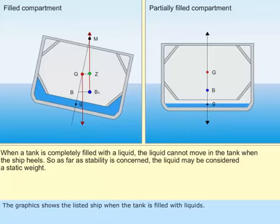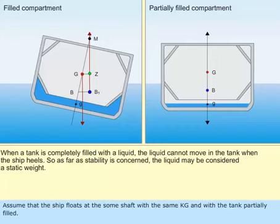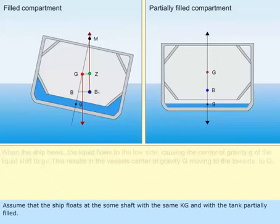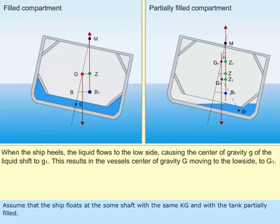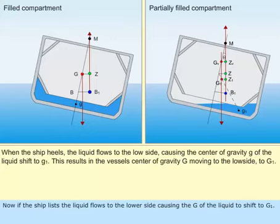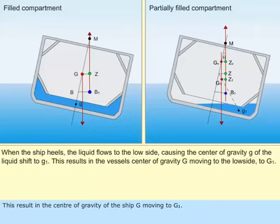The graphic shows the listed ship when the tank is filled with liquids. Assume that the ship floats at the same draft with the same KG and with the tank partially filled. Now, if the ship lists, the liquid flows to the lower side, causing the G of the liquid to shift to G1. This results in the center of gravity of the ship G moving to G1. This effect is called the free surface effect.